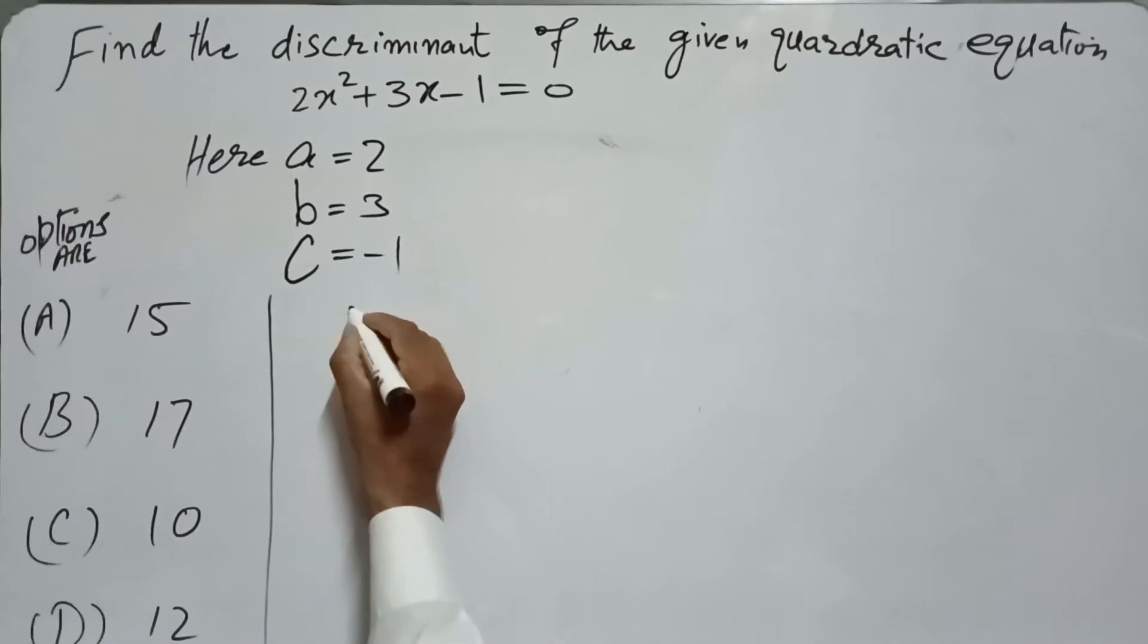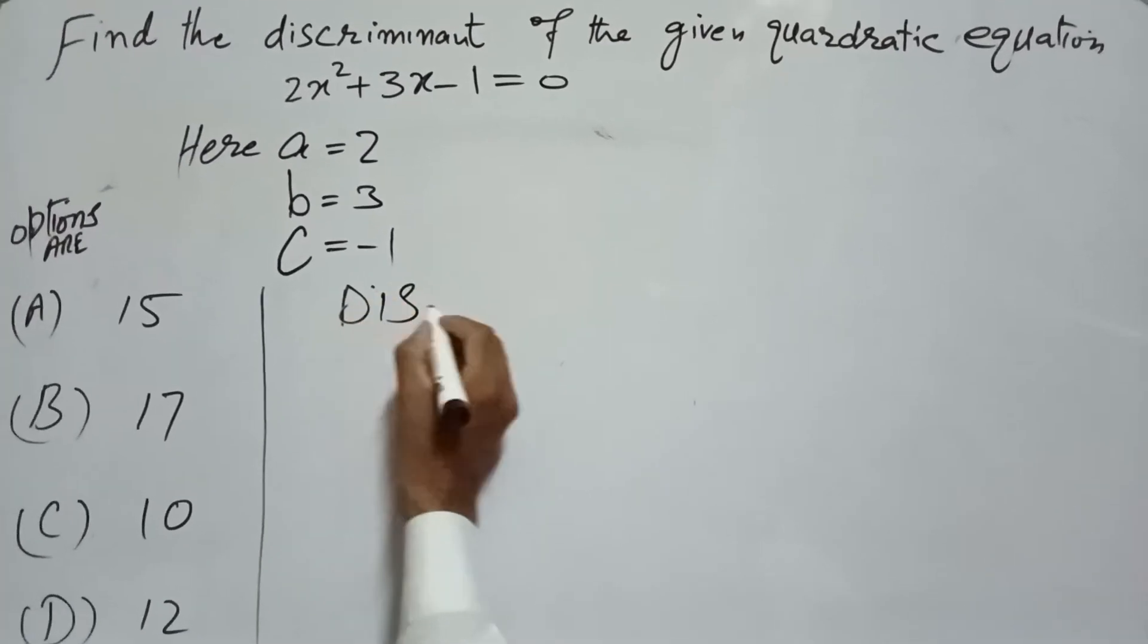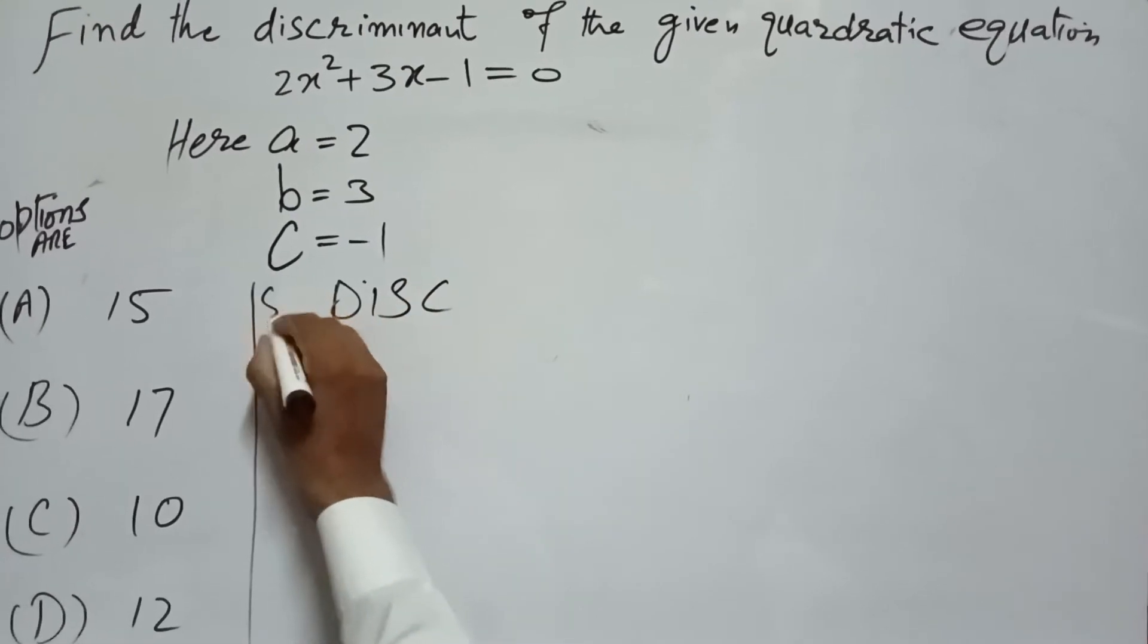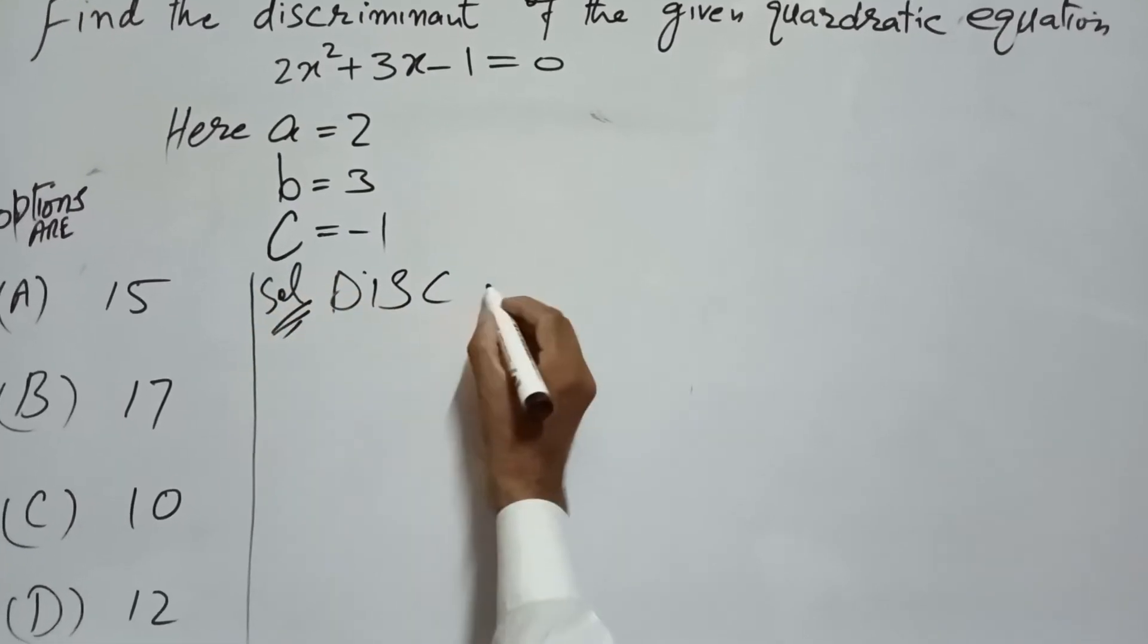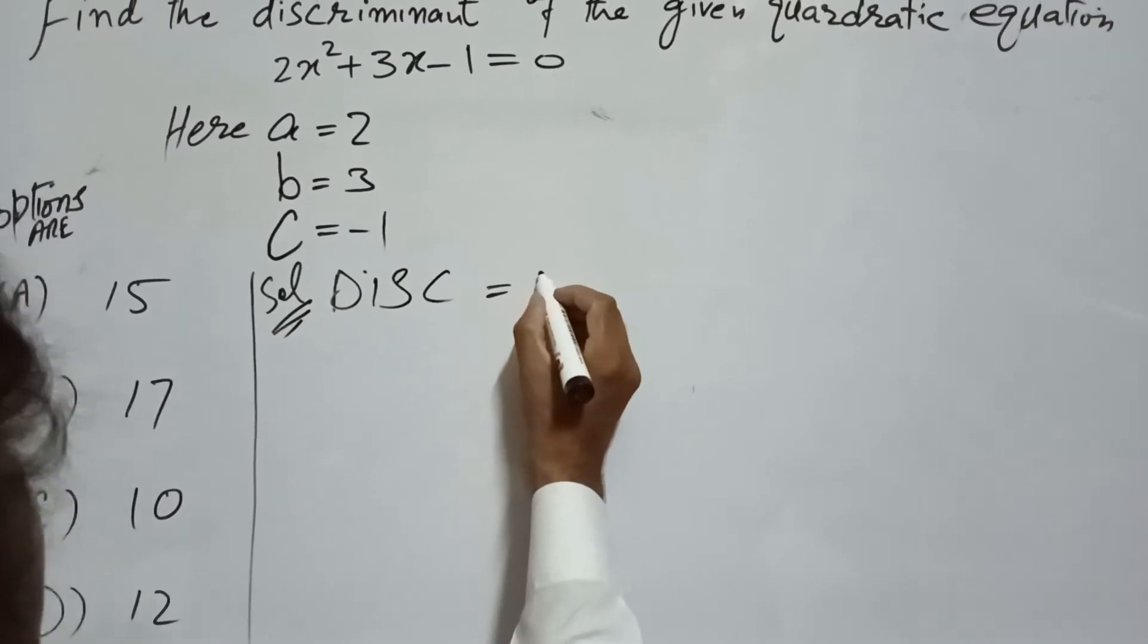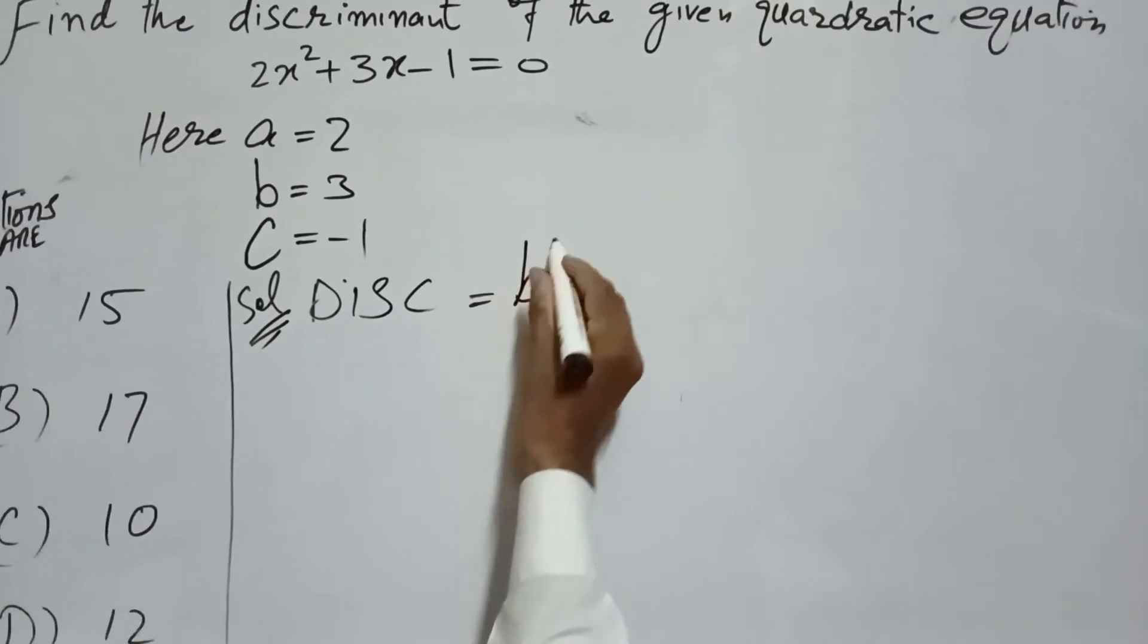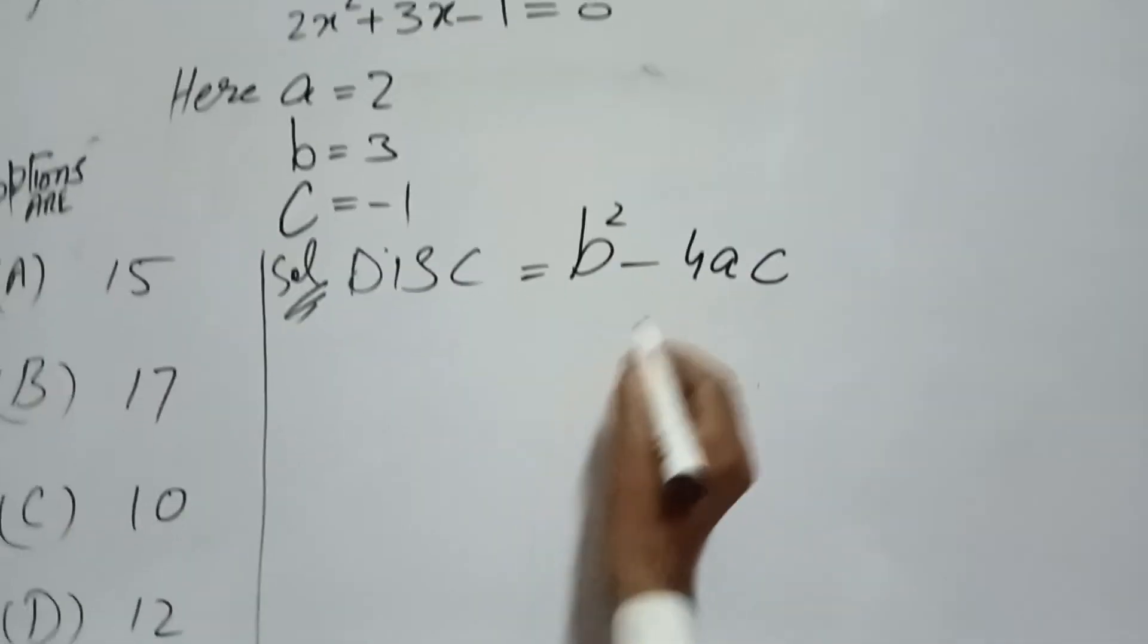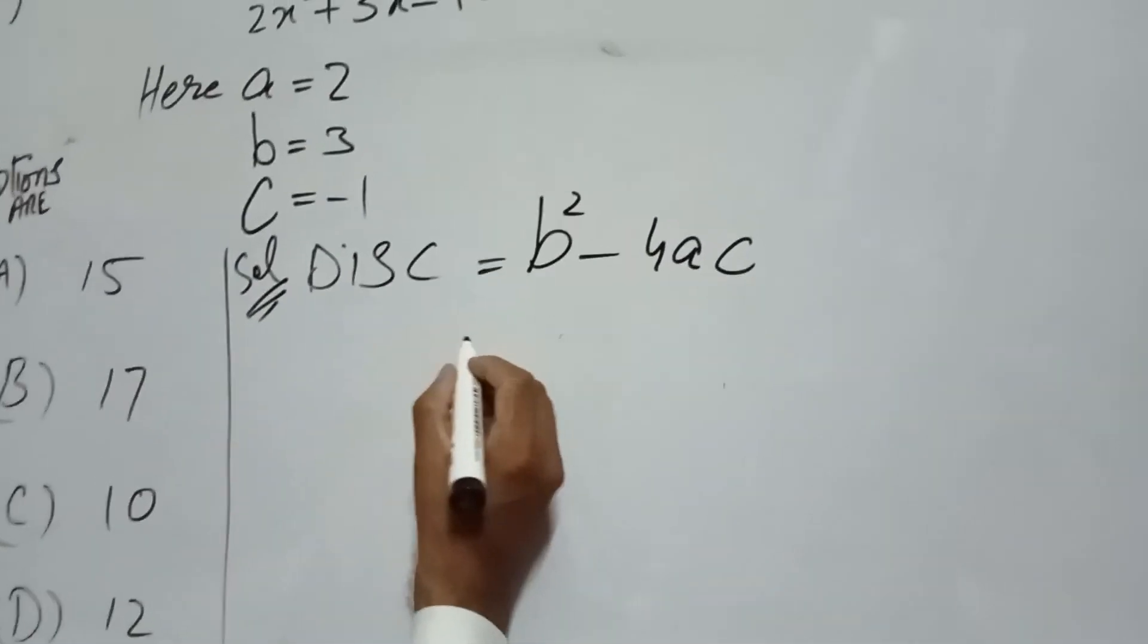We will use the discriminant formula. The discriminant formula is equal to b² minus 4ac. This is the discriminant formula.